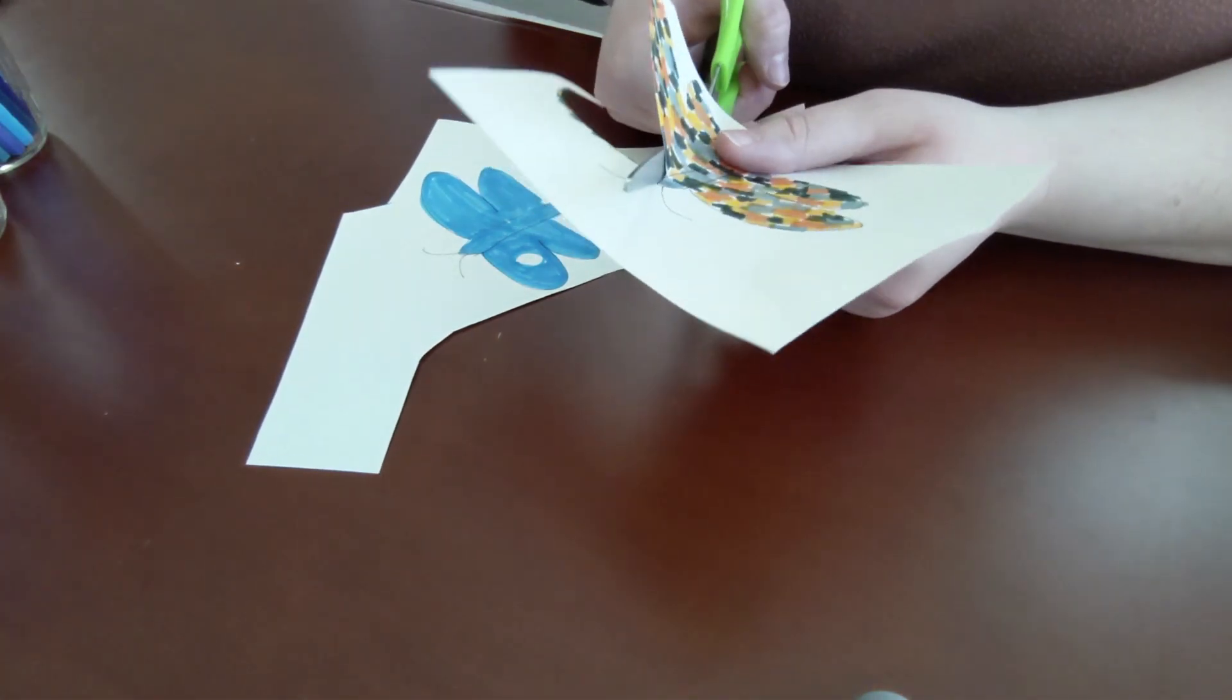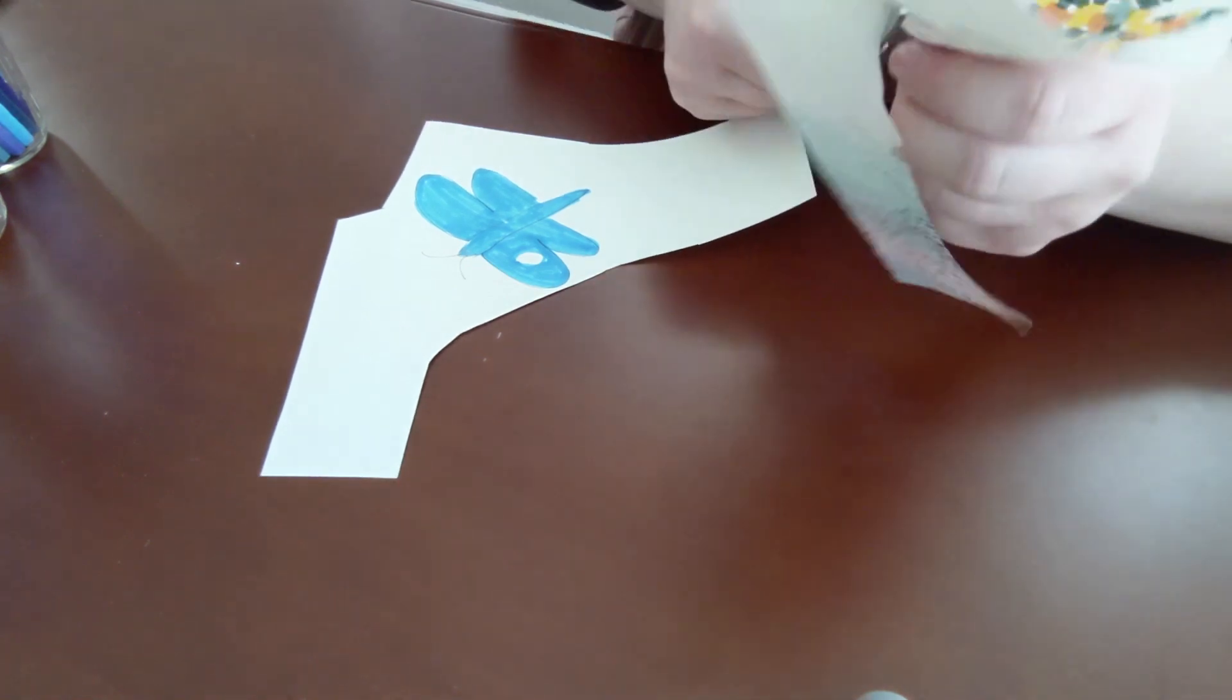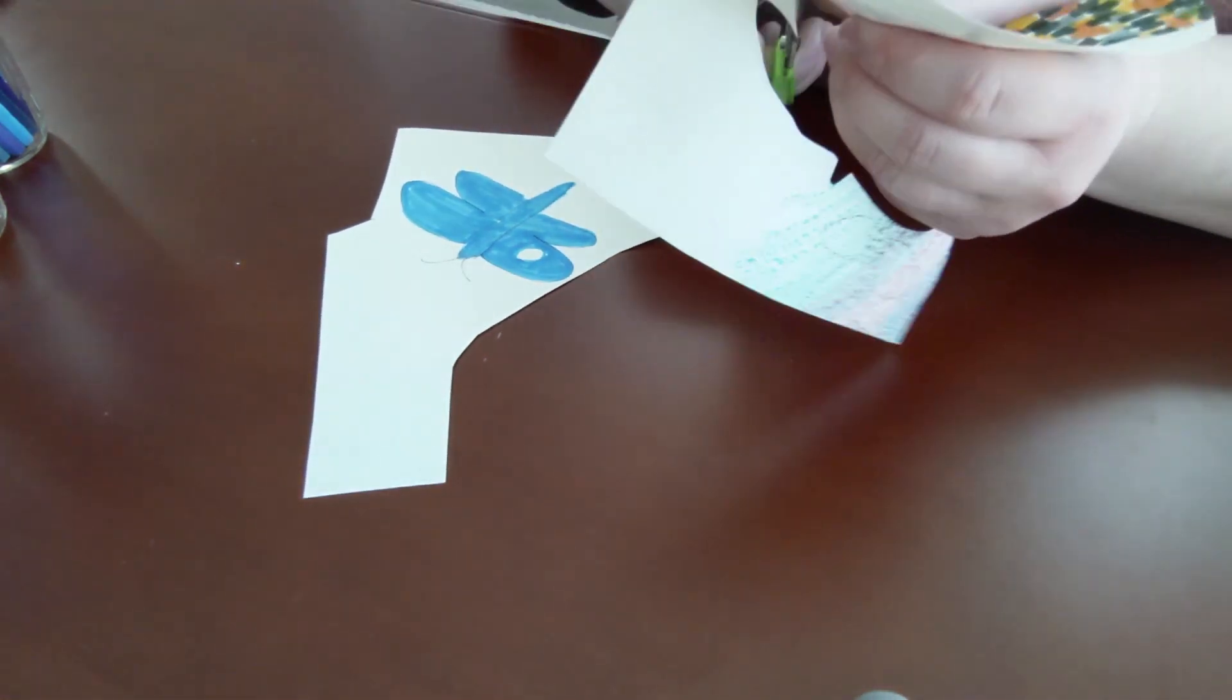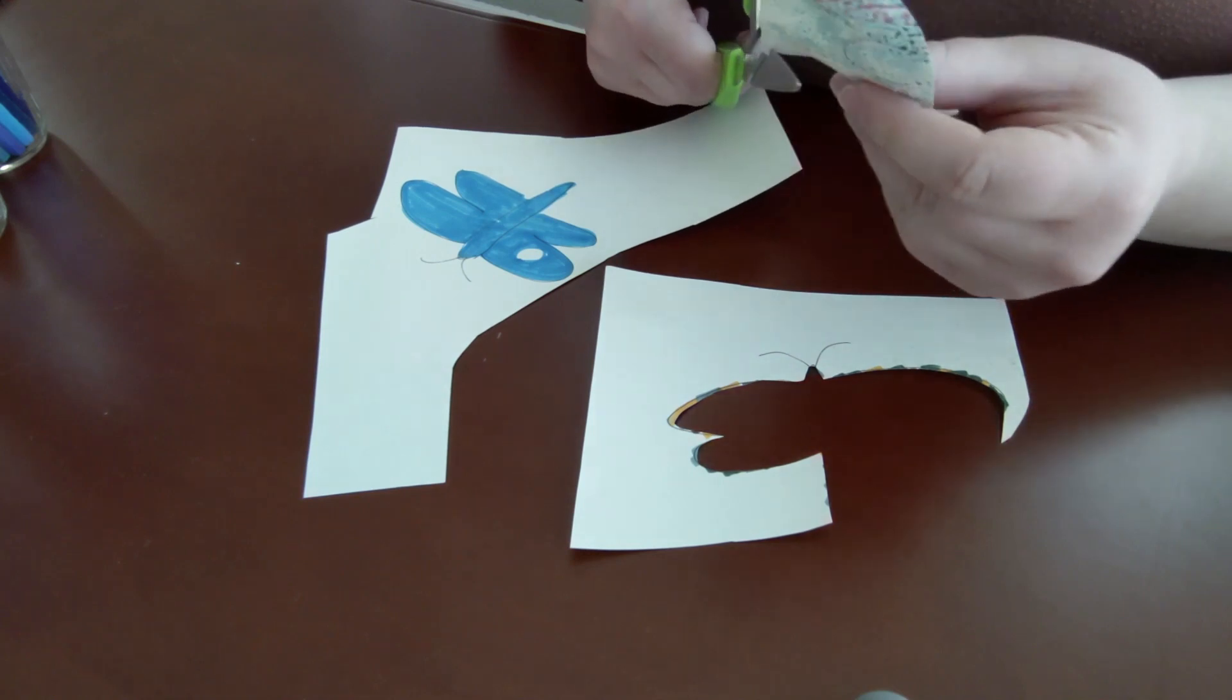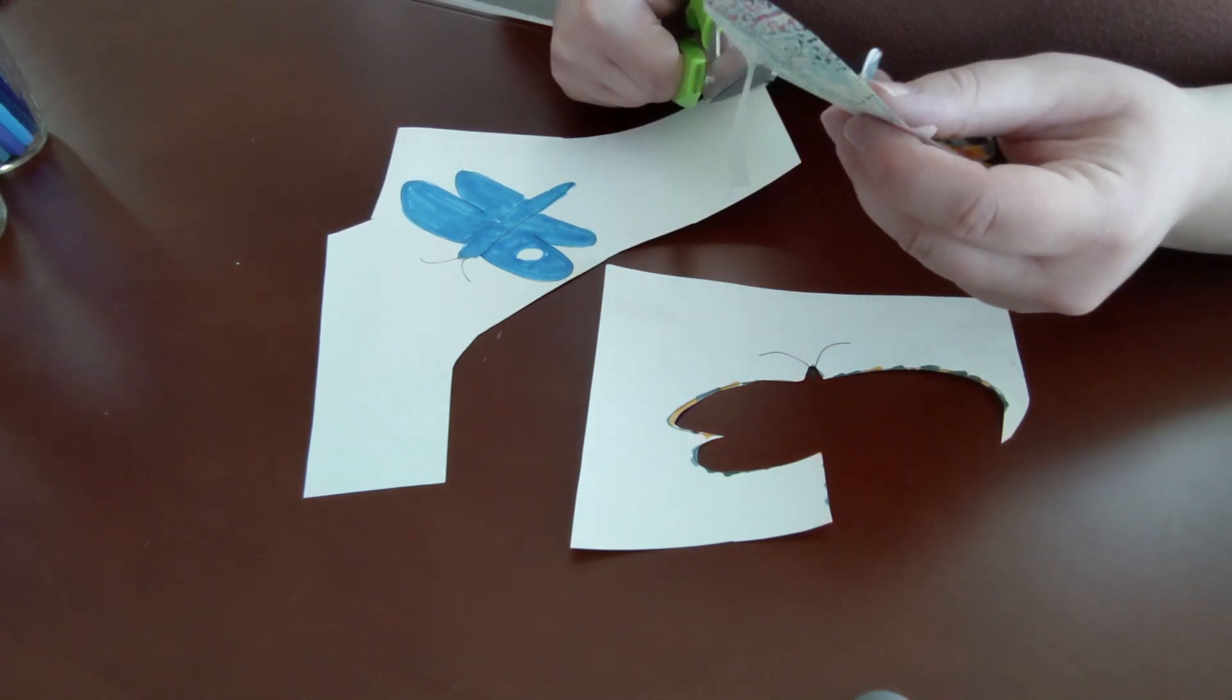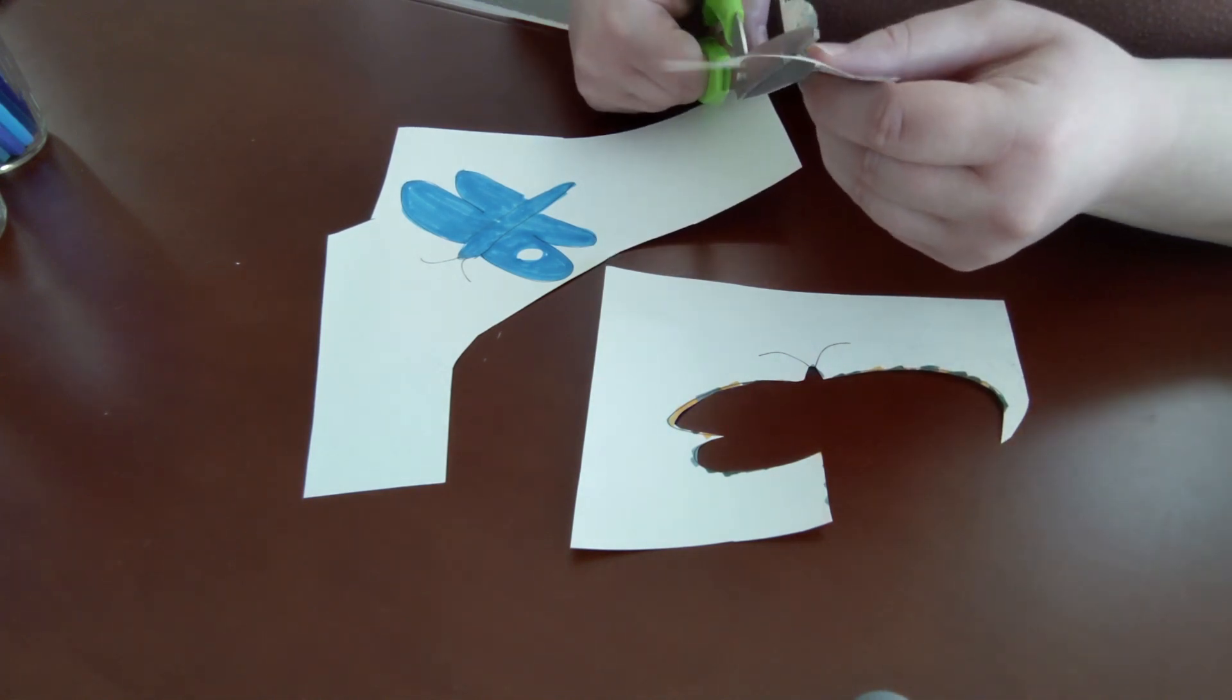Did you know that both moths and butterflies have really long tongues? It's called a proboscis and it works kind of like a straw. When they're not using it, it's curled up on their face. And then when they land on a flower to sip the nectar, they uncurl their proboscis and stick it down into the flower.